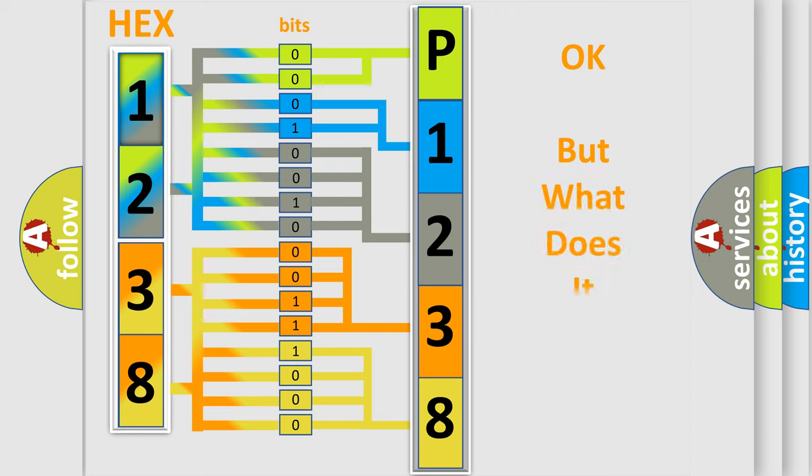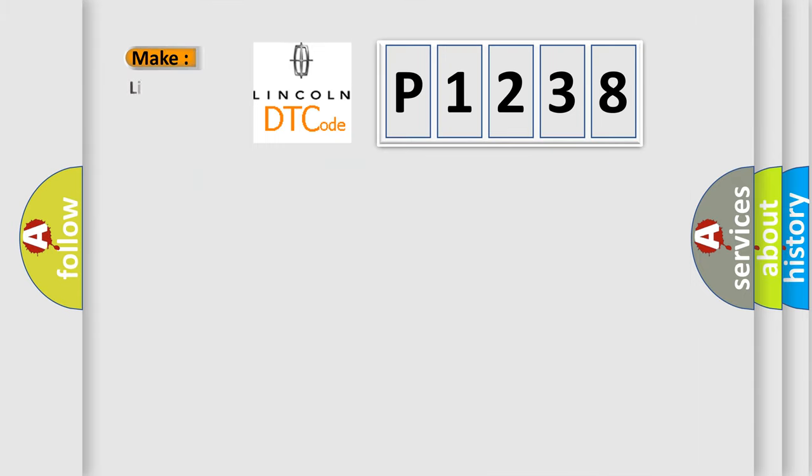The number itself does not make sense to us if we cannot assign information about what it actually expresses. So, what does the diagnostic trouble code P1238 interpret specifically for Lincoln car manufacturers?